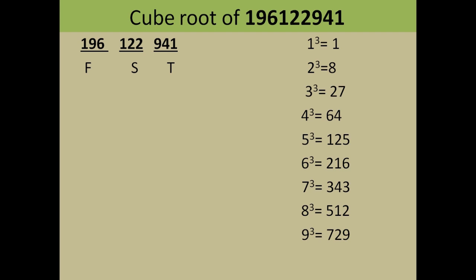When making pairs, always start from the last digit. If the number were eight digits, you would have pairs of three, three, and two digits — the first pair would have two digits. Also remember: whenever you have a seven- to nine-digit number, the cube root will have three digits in its answer.